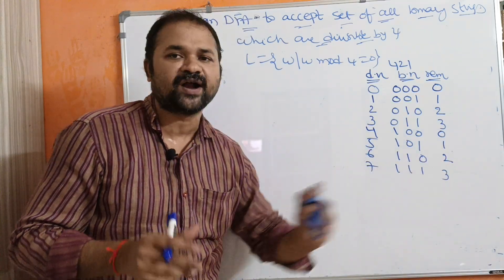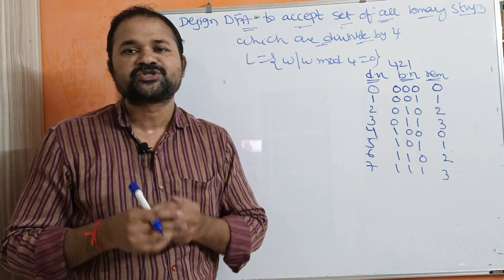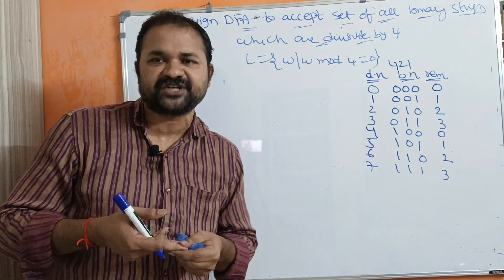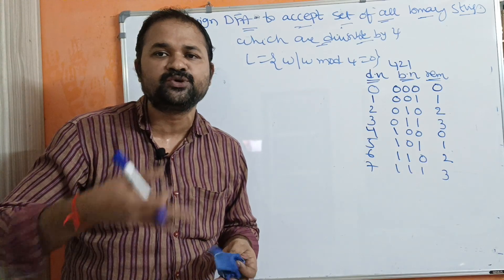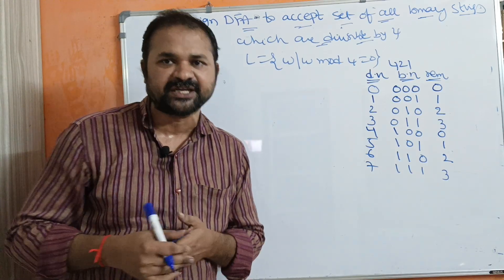So the key point is: if we divide any binary number by 4, then the possible remainders are 0, 1, 2, and 3. Therefore, we require a total of 4 states: Q0, Q1, Q2, and Q3.